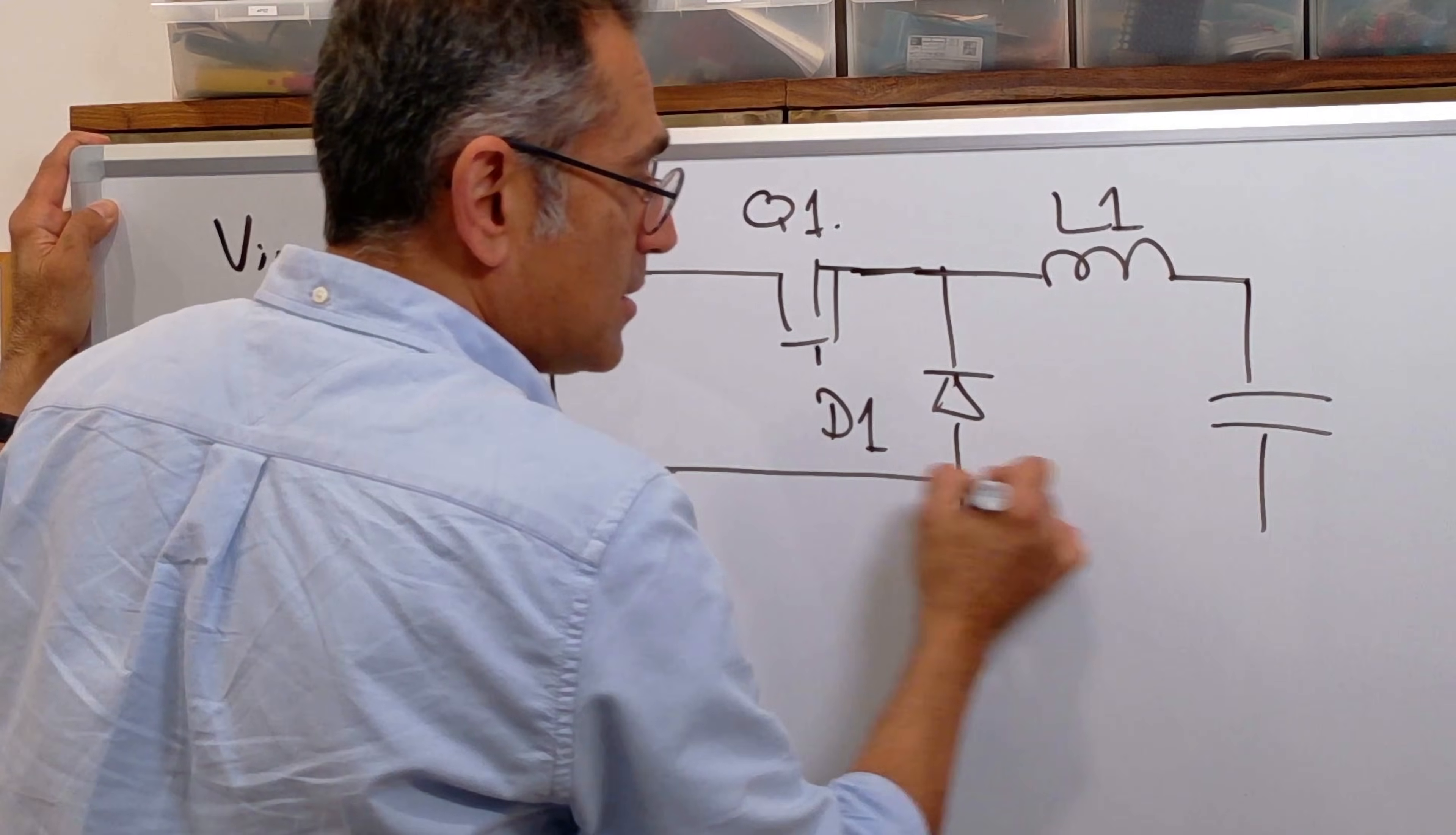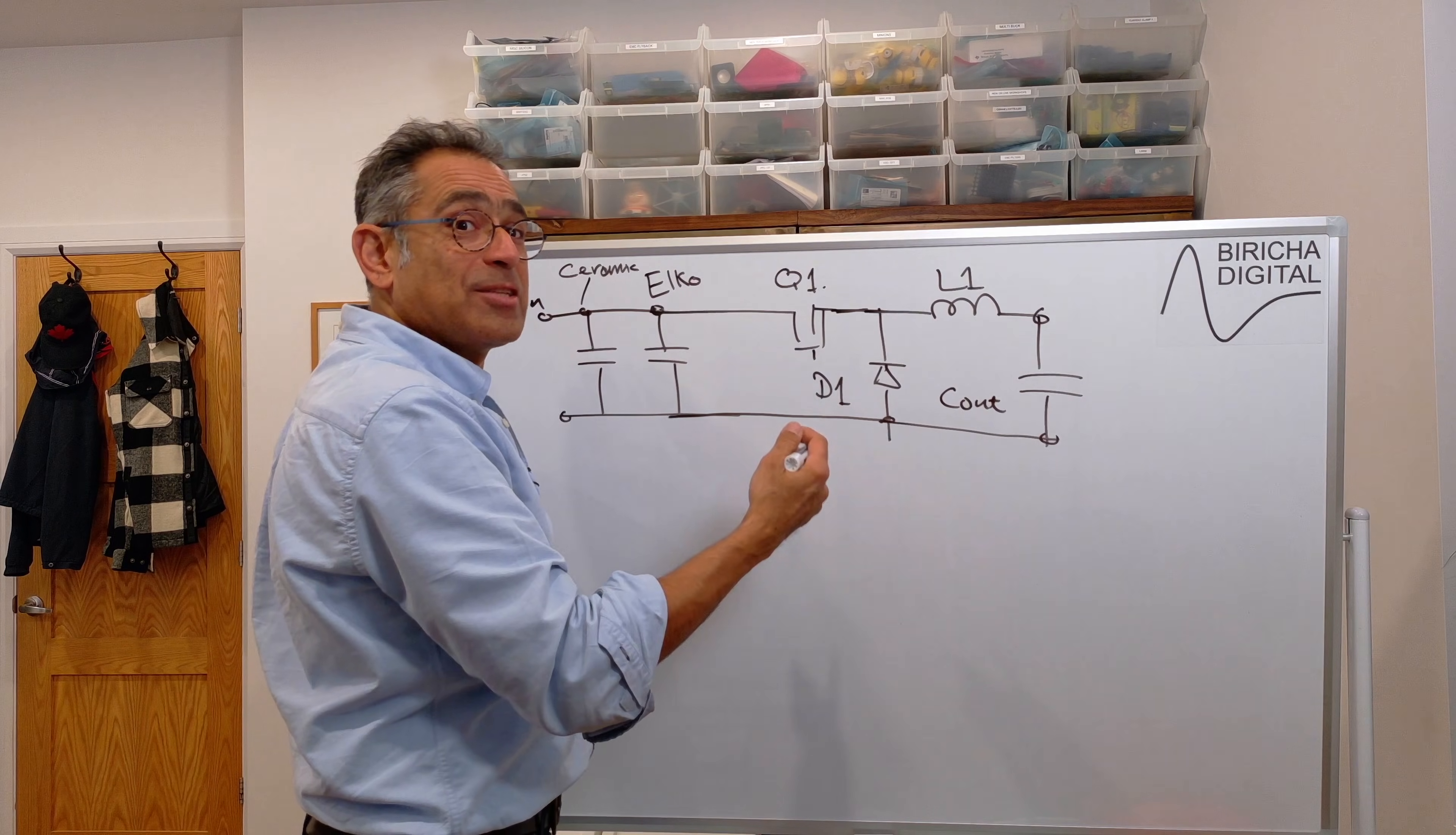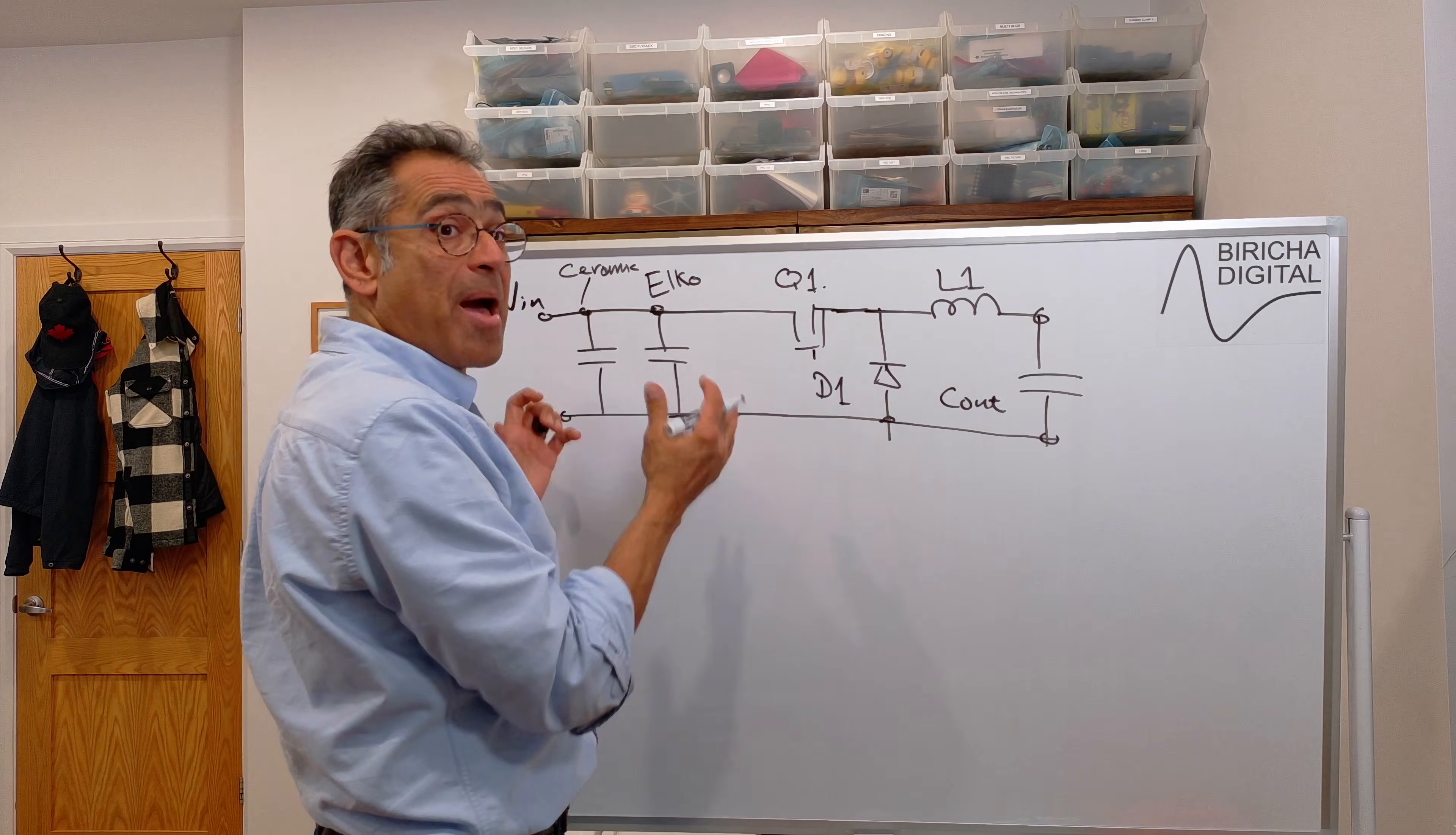And then you have a certain amount of output capacitance that we call Cout. And again, we will learn about how you calculate this and how we select. So that is the power stage.